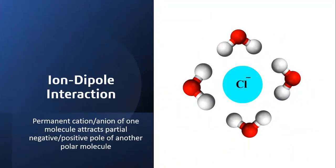In ion-dipole interaction, a permanent cation or anion of one molecule attracts the partial positive or negative pole of another polar molecule — like when we dissolve sodium chloride in water. Here we show that the chloride ion is surrounded by the positive pole of the water molecules.